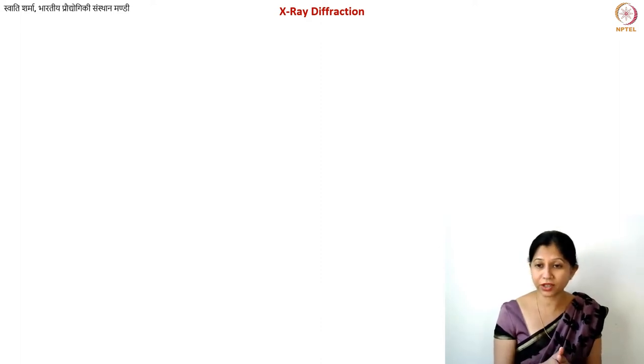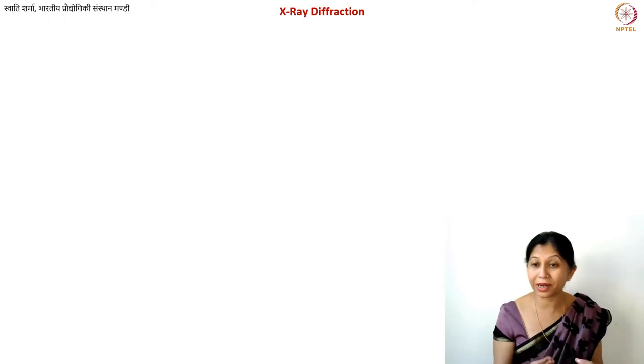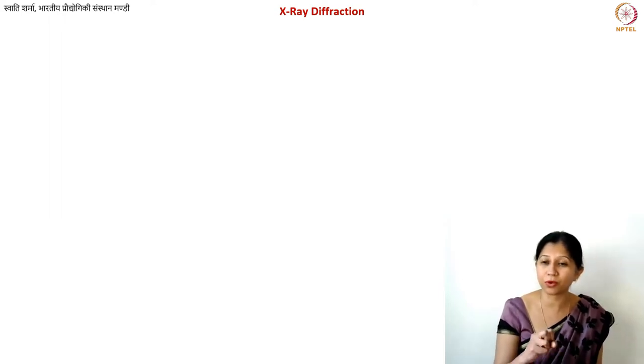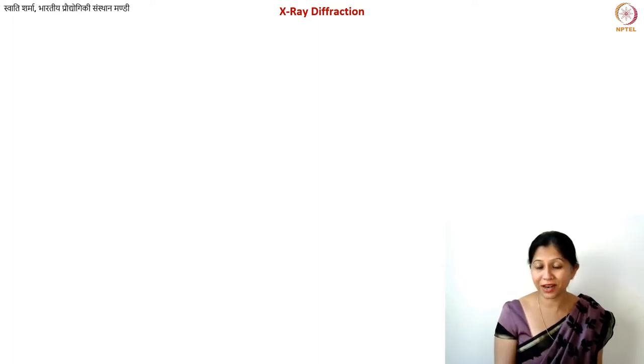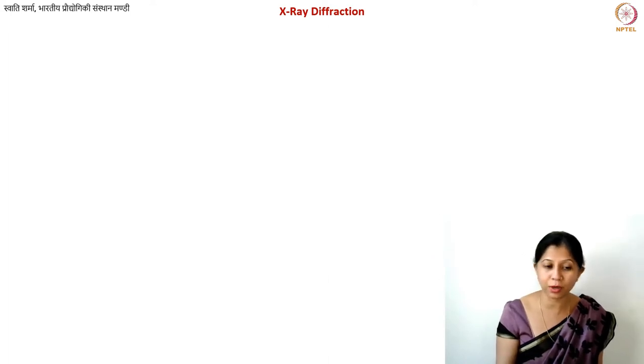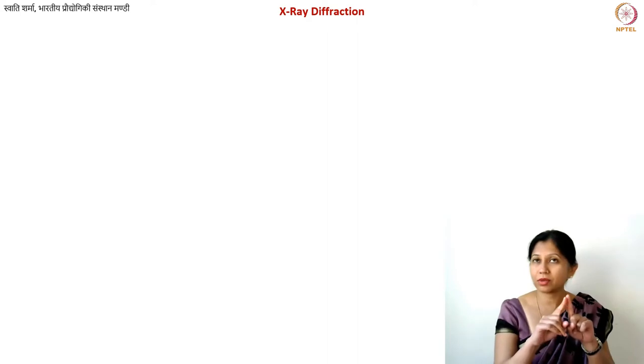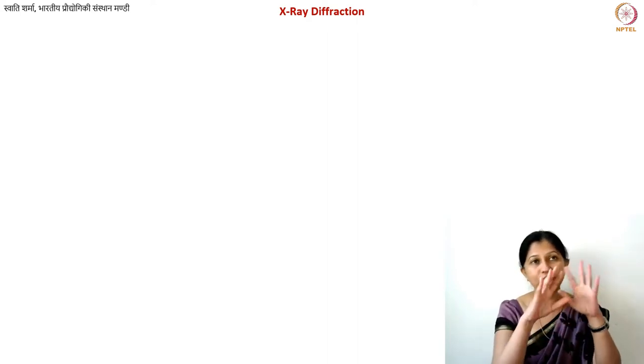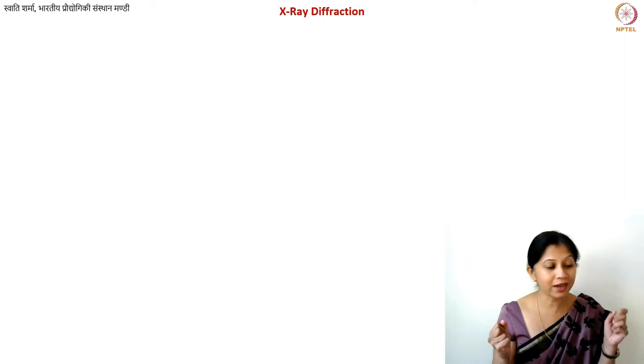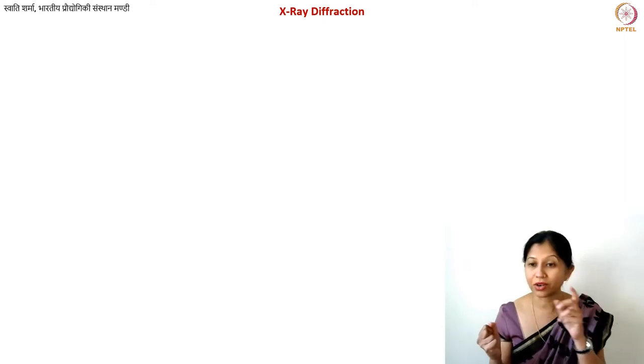I will not go too much into the details of the fundamentals of X-ray diffraction. I will focus more on how this technique is used for carbon materials and how to analyze X-ray diffraction patterns for a graphitic carbon material. By the end of this lecture, you should be able to identify the primary peaks for graphite and graphite-like carbons, and understand how the shape of these peaks changes when we have more disorder or more order in our carbon material.